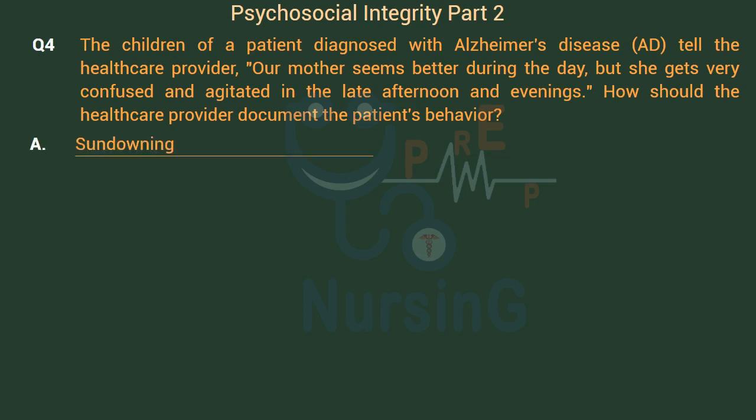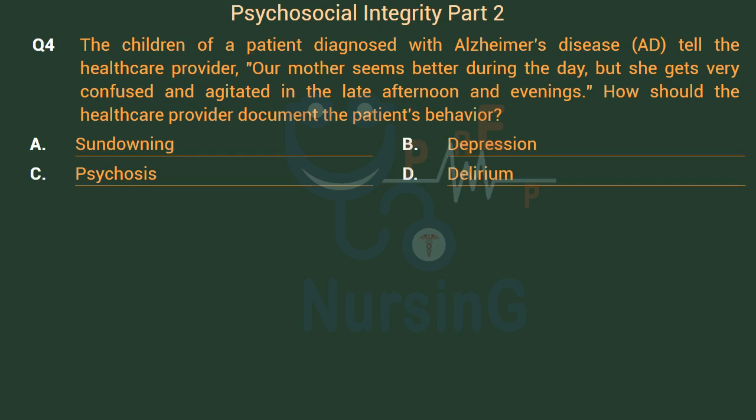Option A: Sundowning. Option B: Depression. Option C: Psychosis. Option D: Delirium.